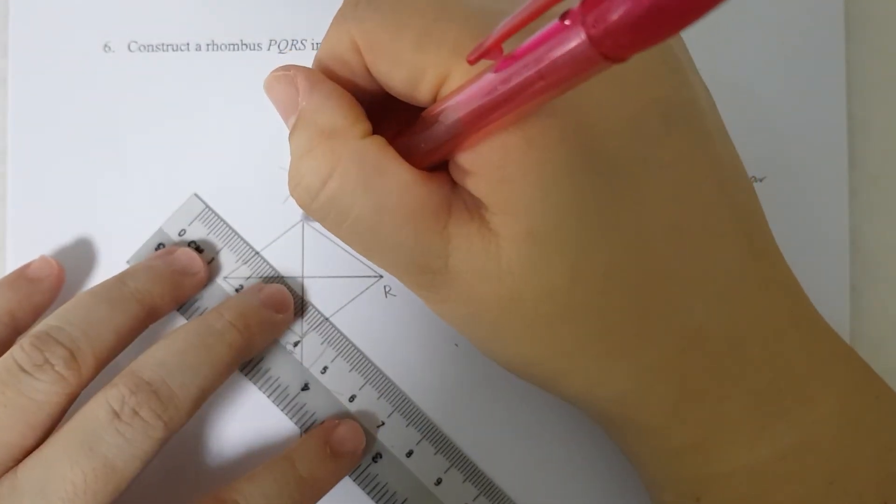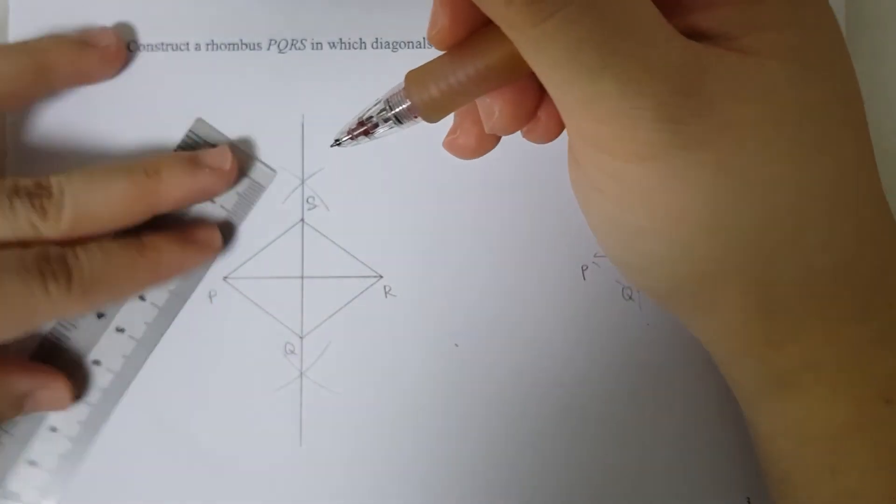Okay, there you go. I have my rhombus PQRS. If you were to measure the sides, the length of the side I have is about 2.5 cm.